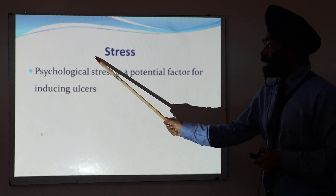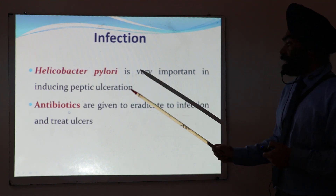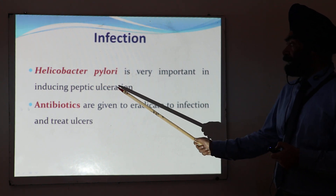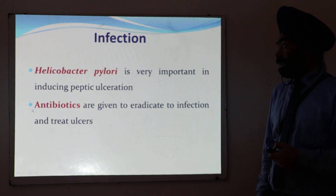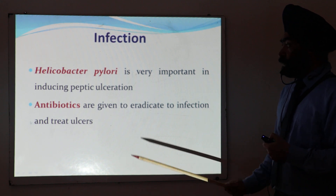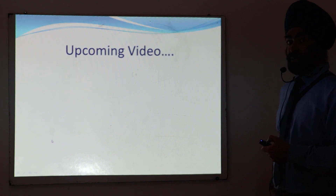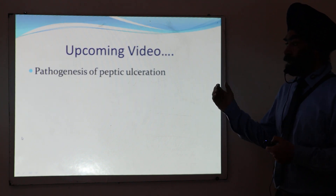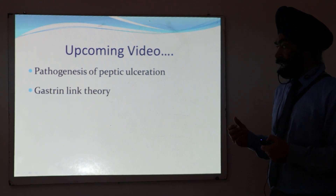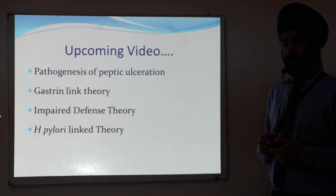Psychological stress is an important factor in ulcer development. Infection with Helicobacter pylori, or H. pylori, is very important in inducing peptic ulceration, and antibiotics are given to eradicate the infection and treat ulcers. In the upcoming video I will continue with peptic ulceration, discussing pathogenesis through three theories: the gastric acid link theory, impaired defense theory, and the H. pylori link theory.